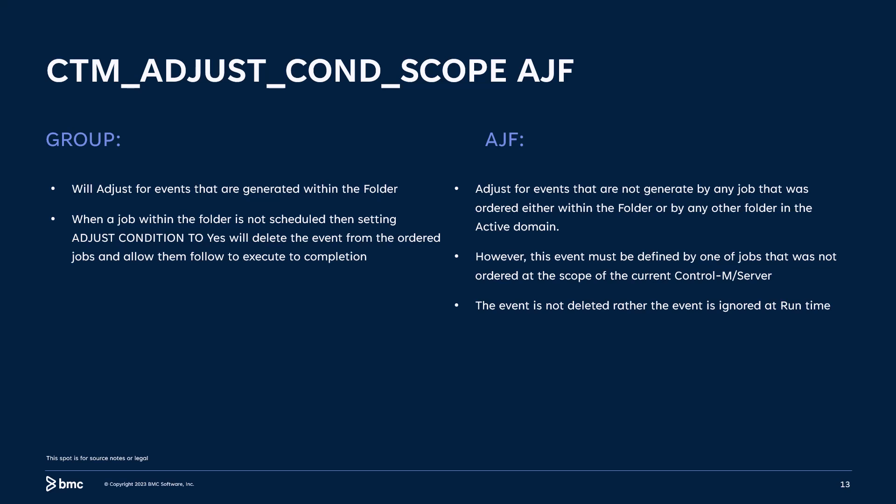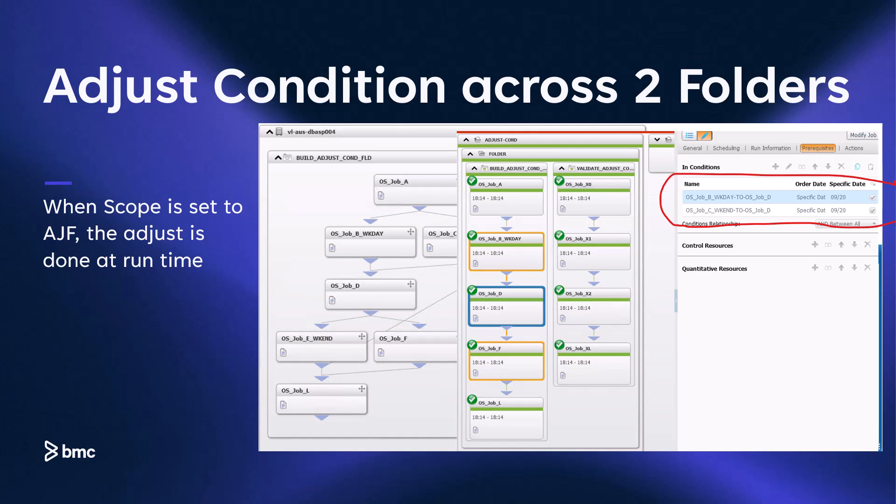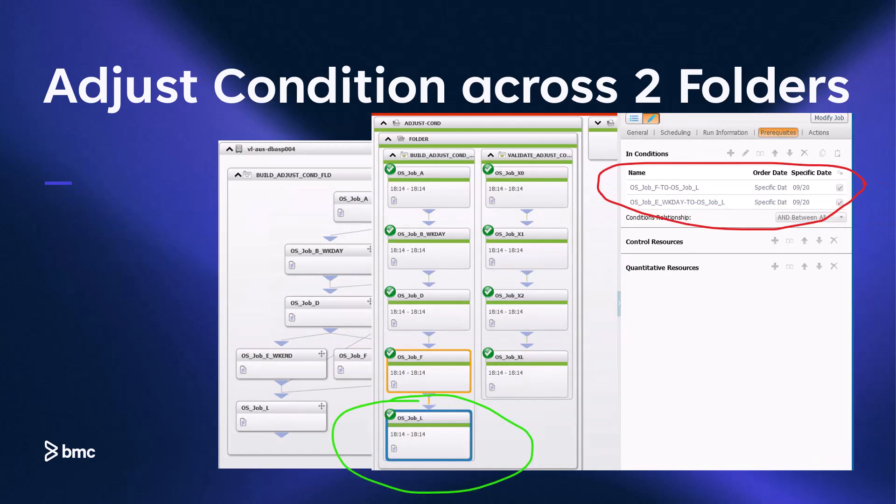Let's go through an example and see how it works. After making changes to the system parameters — CTM adjust condition scope — and setting it to AJF, I'm going to order the two folders again. Both folders are ordered and both folders ran to completion with all the events being adjusted at runtime. Zooming in on job D, we see that job D was waiting for both job B and job C to complete, as seen in the prerequisite tab. With adjust condition option set to yes and the system parameter adjust condition scope set to AJF, the run criteria adjusted the events by ignoring the prerequisite events that would have been generated if there was no conflict in scheduling, and allowed the jobs to run.